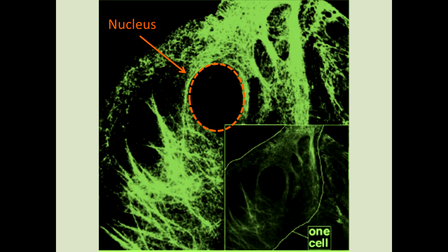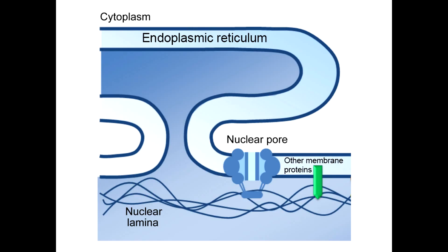In this cell, the intermediate filaments, stained green, surround the nucleus and help keep its position stable within the cell. Intermediate filaments called lamins compose the nuclear lamina — a layer of filament just inside the nuclear membrane that provides structural support and regulates some of the activities that go on within the nucleus.